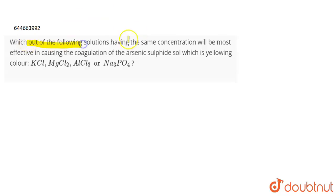The question is which of the following solutions having the same concentration will be the most effective in causing the coagulation of arsenic sulfide sol which is yellow in color.